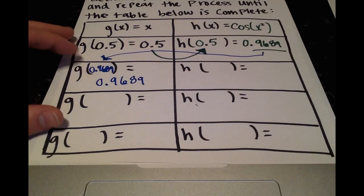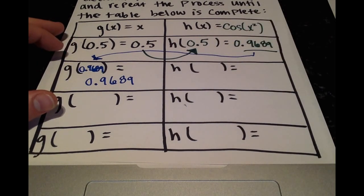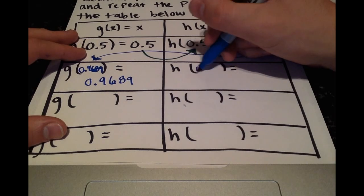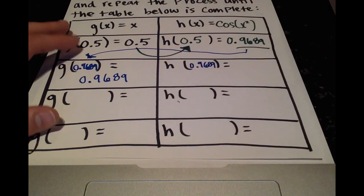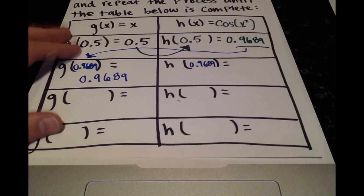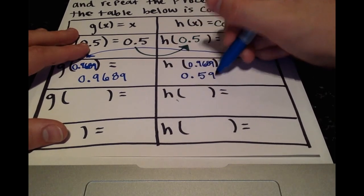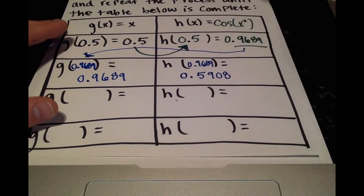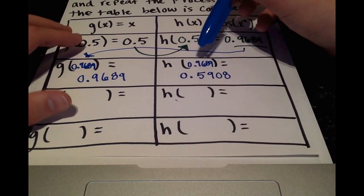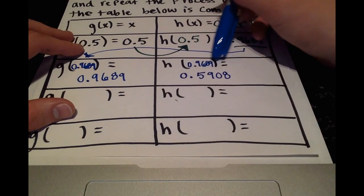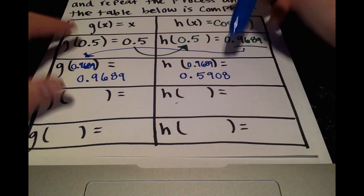So g of 0.9689 is going to be 0.9689. And then we'll plug that result into the h of x function. So h of 0.9689, what will that equal? That will be 0.5908. And for all of the h of x values, we're just plugging the value into cosine of x squared. And then that is the value we get.